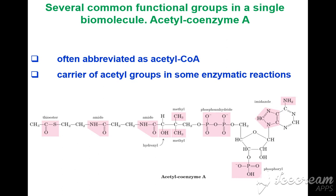Acetyl-CoA is a carrier of acetyl groups in some enzymatic reactions — this is very important. Acetyl-CoA can have a thioester group, amido groups (two amido groups and one methyl group), a phospho group, a phosphoanhydride group, an imidazole group, and a phosphoride group. These are almost 7 functional groups in a single biomolecule.